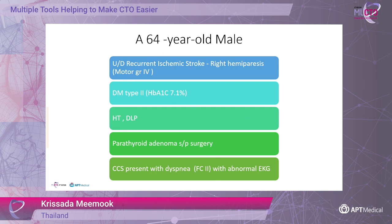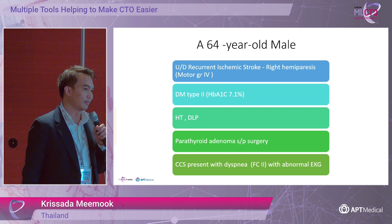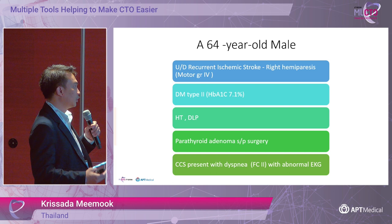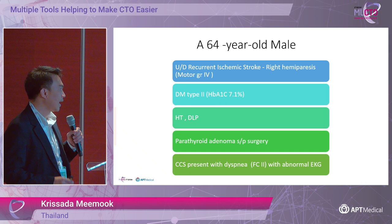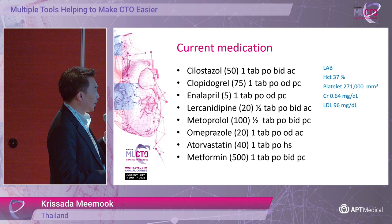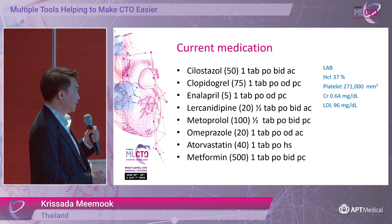This is a 64-year-old male. He has a history of recurrent stroke, dyslipidemia, hypertension, and type 2 diabetes. He was sent to our clinic with dyspnea on exertion without chest pain and an abnormal ECG. This is his current medication — he received aspirin and clopidogrel from neurologists, along with anti-hypertensives, a statin, and metformin.